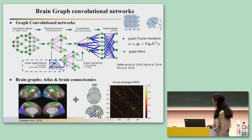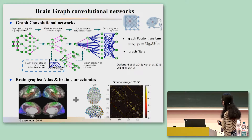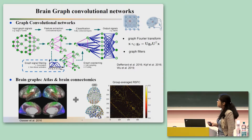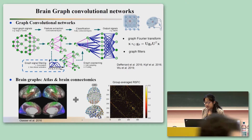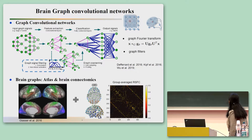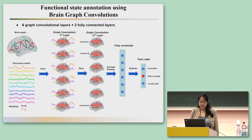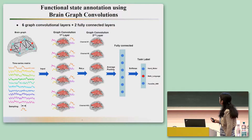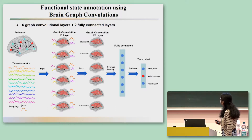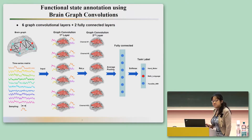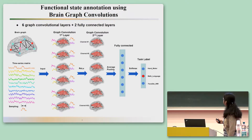To use this framework on brain graphs, we need to define two key concepts: nodes and edges. For nodes, we use the Glasser atlas, which includes 360 regions. For edges, we use resting-state functional connectivity calculated from a large group of subjects, used as the adjacency matrix. Together these define the brain graph. The other key input is a time series matrix with dimensions of brain regions by time.